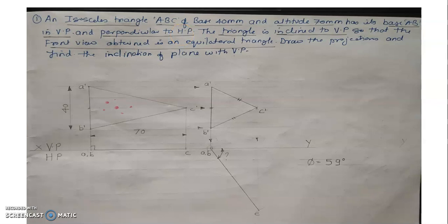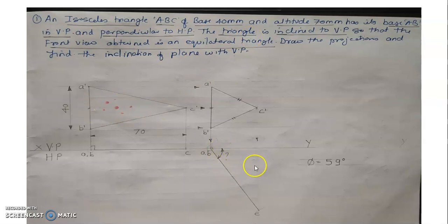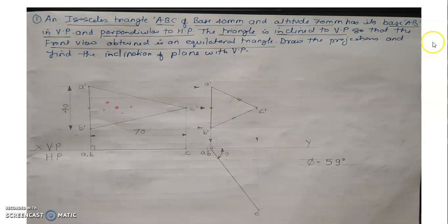The second condition indicates the final condition. The triangle is inclined to VP so that the front view obtained is an equilateral triangle. This isosceles triangle is inclined to VP in such a way that the front view appears as an equilateral triangle. For an equilateral triangle, all three sides are the same. And draw the projection and find the inclination of the plane with VP.